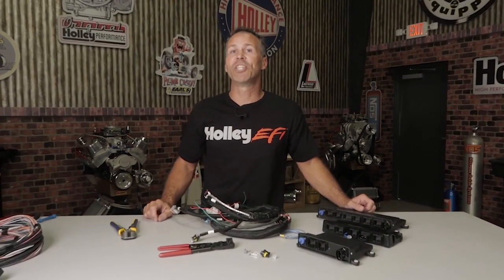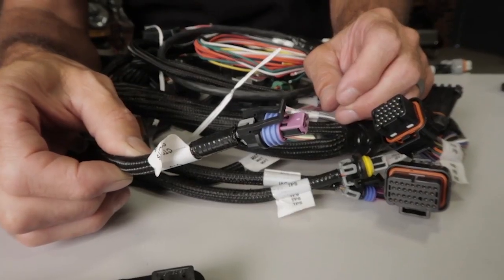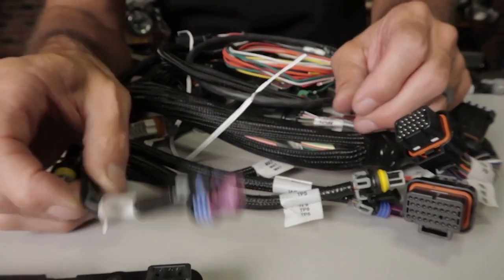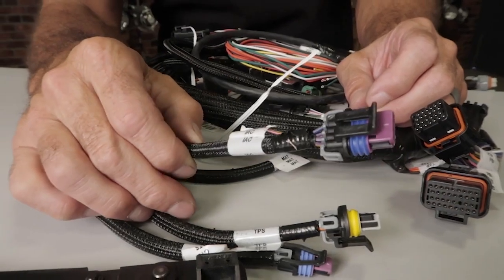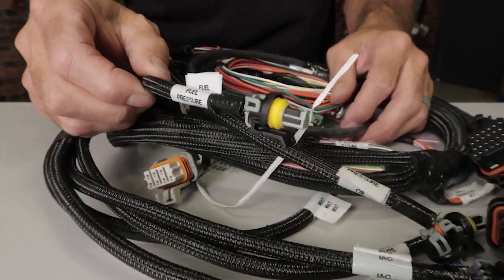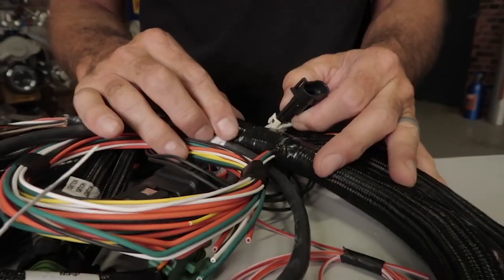GM also uses the Delphi GT150 style connector on their LS engines. You can find this style connector used on the coolant temp sensor, throttle position sensor, idle air control motor, oil pressure, fuel pressure, manifold air temp, and NOx sensors.